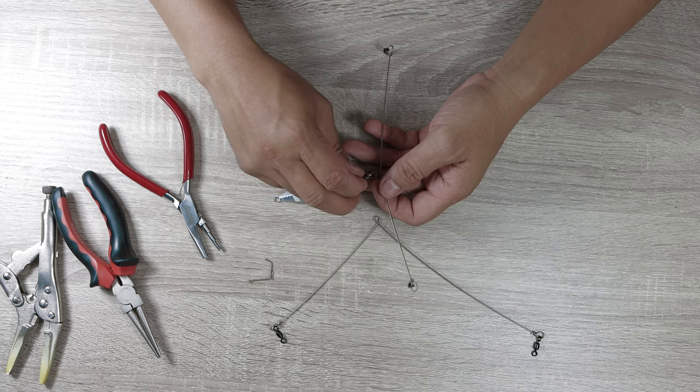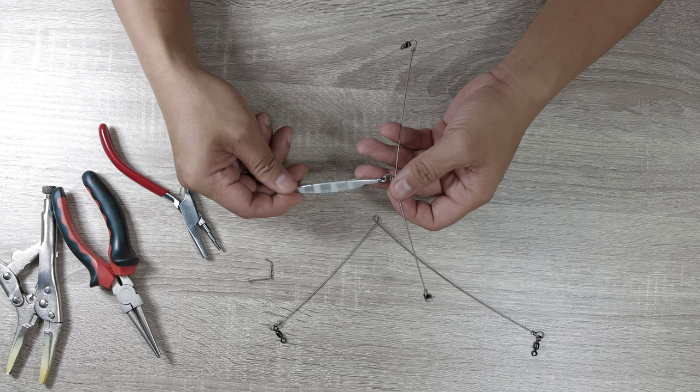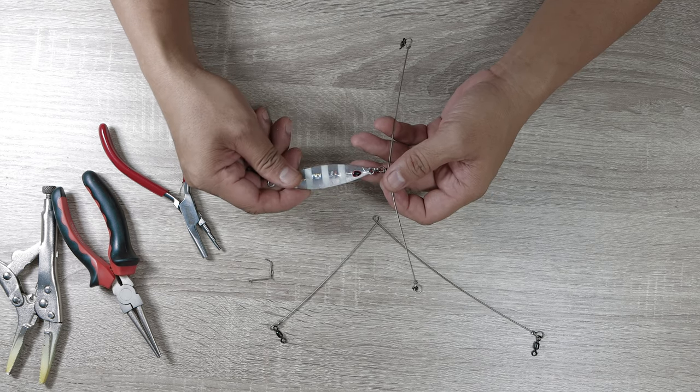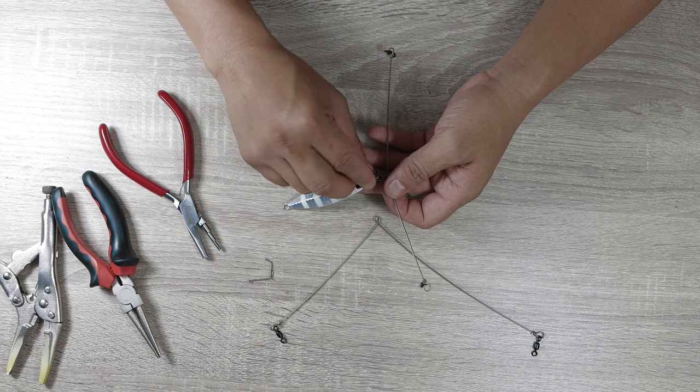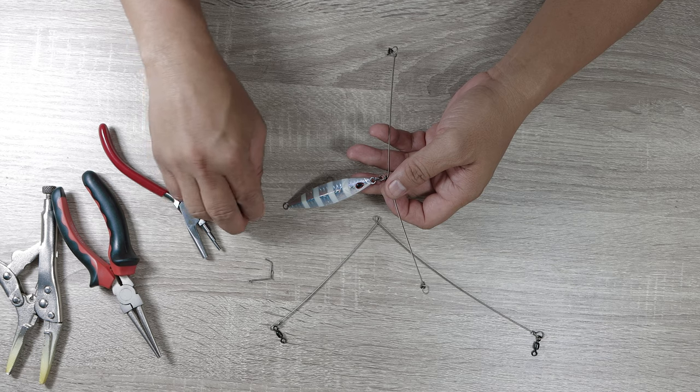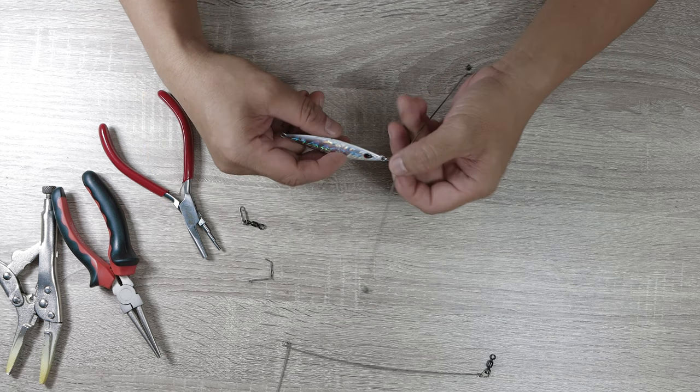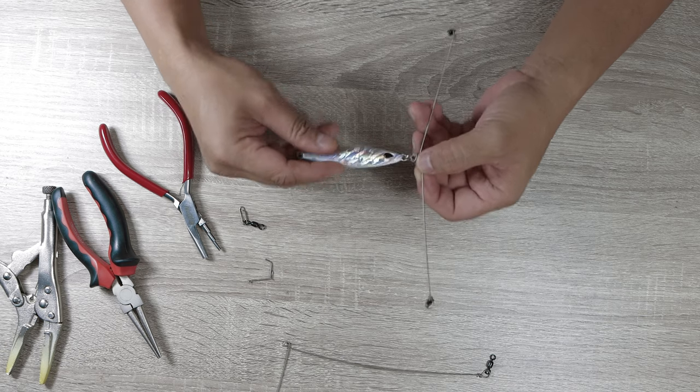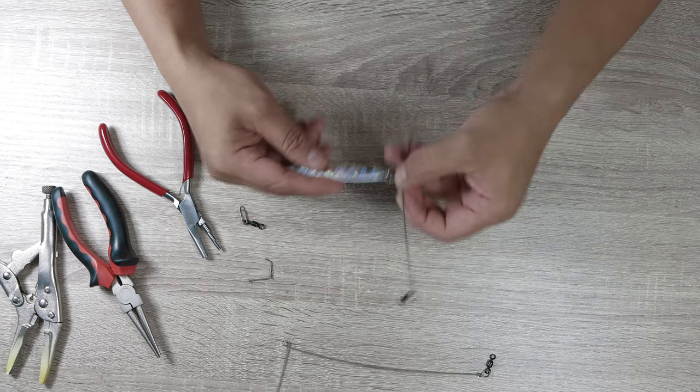Or if I want more action from the jig I want to put a swivel there. Now the reason why I'm not putting a swivel there is because I want the flutter of the jig to actually affect this whole thing.